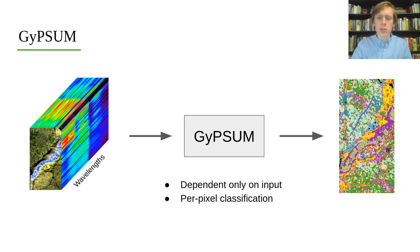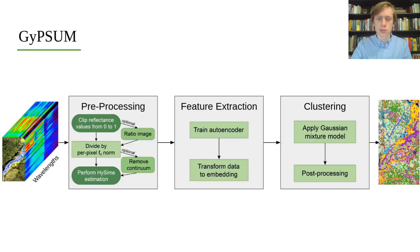We demonstrate our method on high SNR, high spatial resolution laboratory data, and low SNR, low spatial resolution remote sensing data. GYPSOM consists of three phases: preprocessing, feature extraction, and clustering.